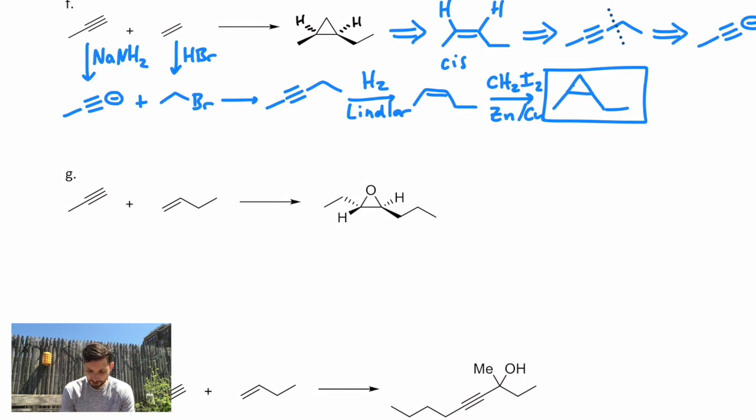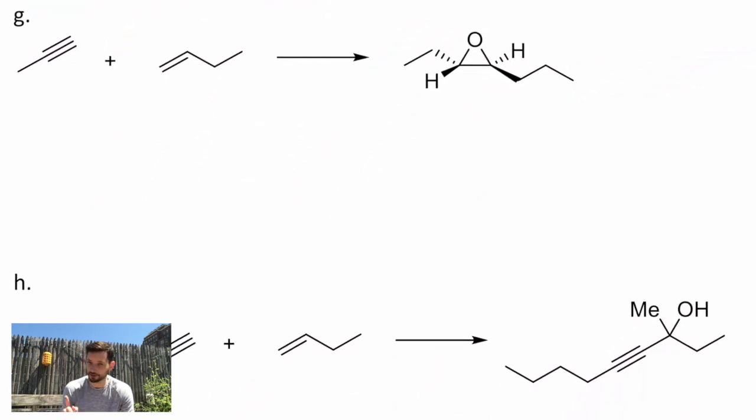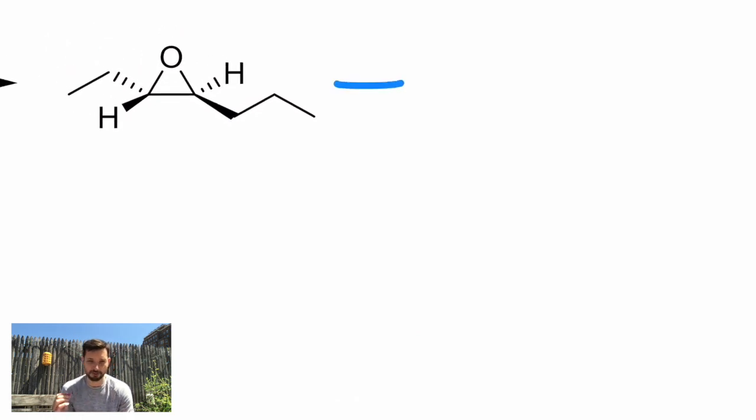Next up, we have an epoxide. Lucky for us, there's only one way to make an epoxide. Notice I'm not even looking at the starting materials yet. I'm just focusing on the product. So going backwards, where did the epoxide come from? That came from an alkene.